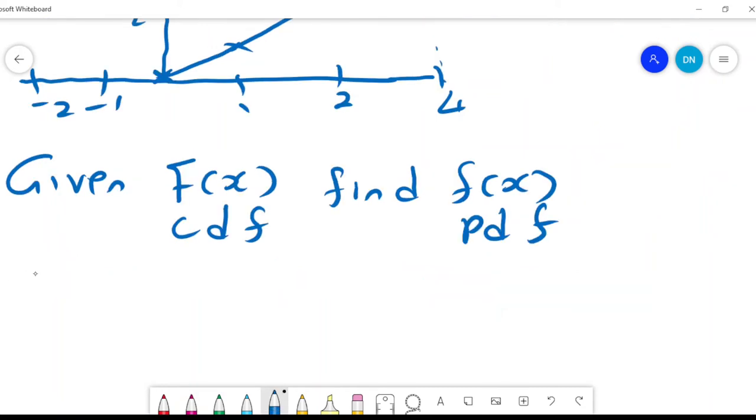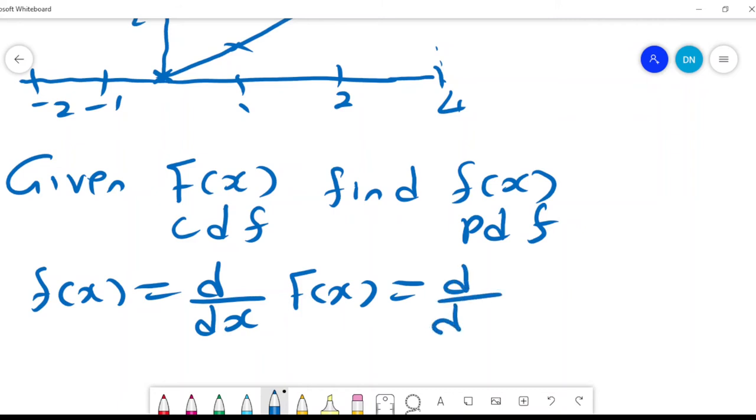Then f(X) is given by the first derivative of F(X), which is d/dx of 1 over 4 times X, which is a quarter.